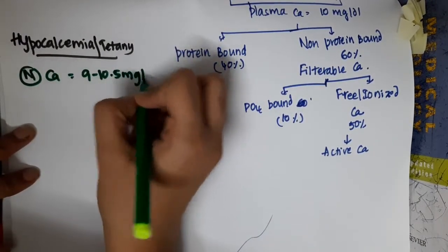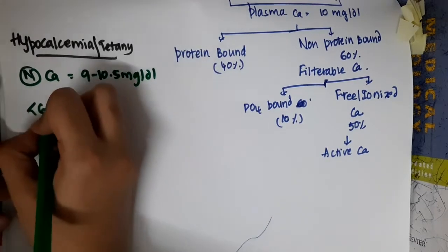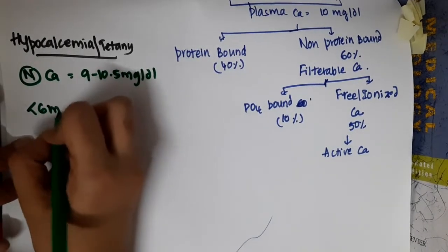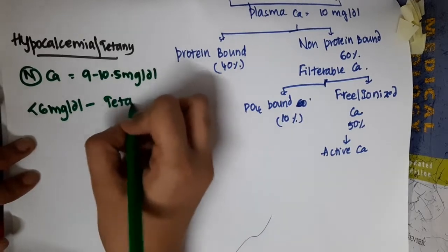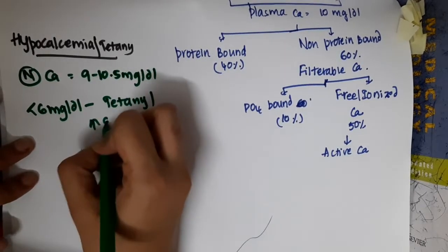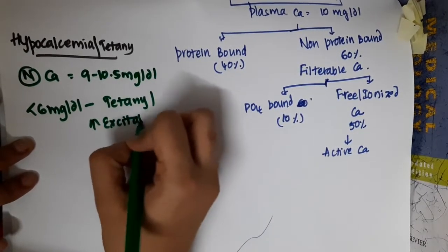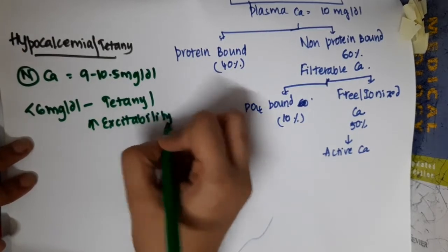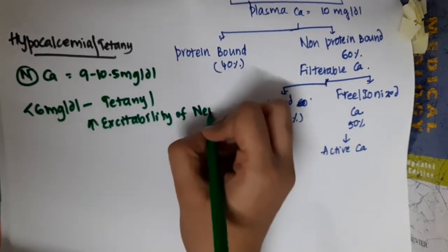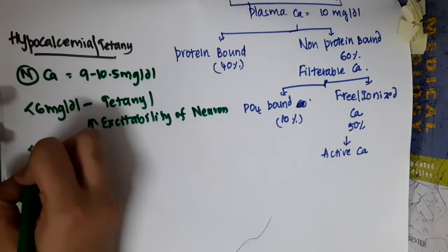If the calcium is less than 6 milligrams per deciliter, this will lead to tetany or increased excitability of neurons. If the calcium concentration is less than 4 milligrams per deciliter, it will be fatal or cause death.